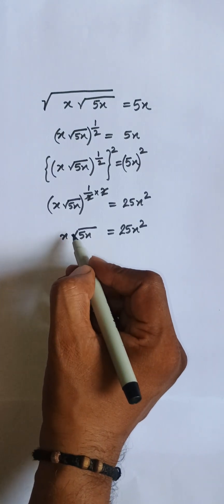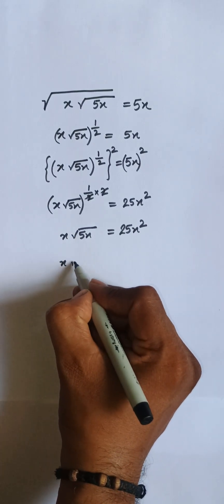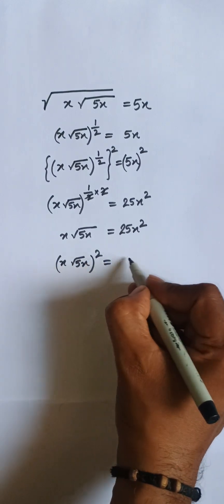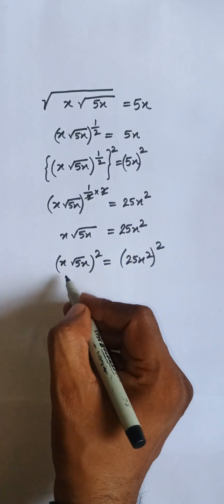We are seeing that we have a square root. I need to remove this square root by putting a square on both sides. So here, [x√(5x)]² = (25x²)².